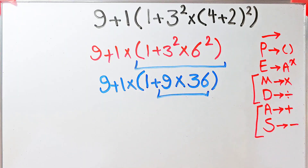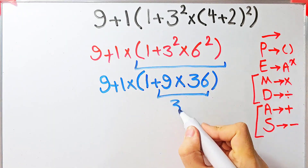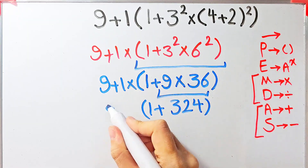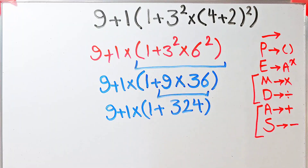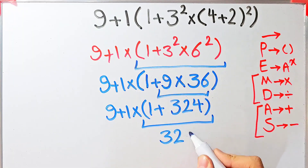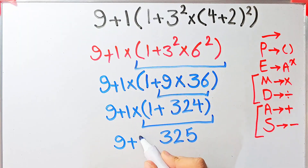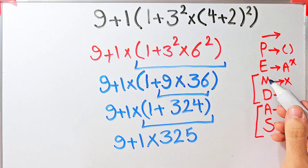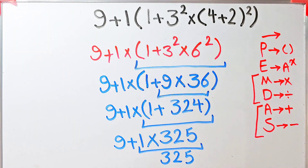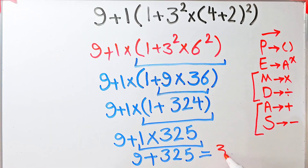Nine times 36 equals 324. Now we have 1 plus 324 inside the parentheses, and the question is 9 plus 1 times 1 plus 324. One plus 324 equals 325, giving us 9 plus 1 times 325. We do this multiplication because it has higher priority than addition: 1 times 325 equals 325, and then 9 plus 325 equals 334.